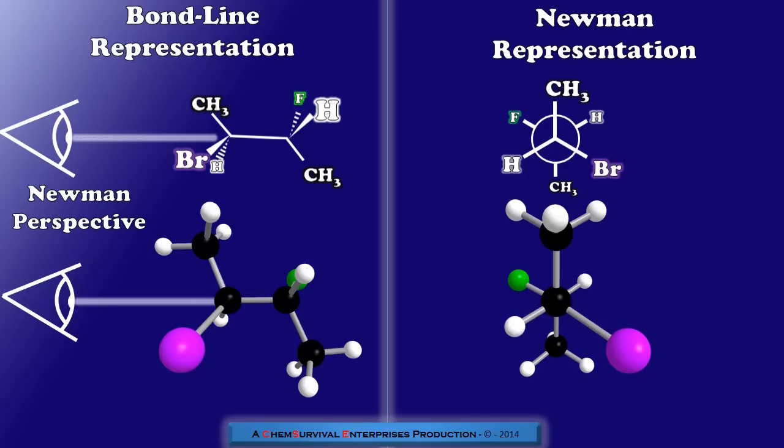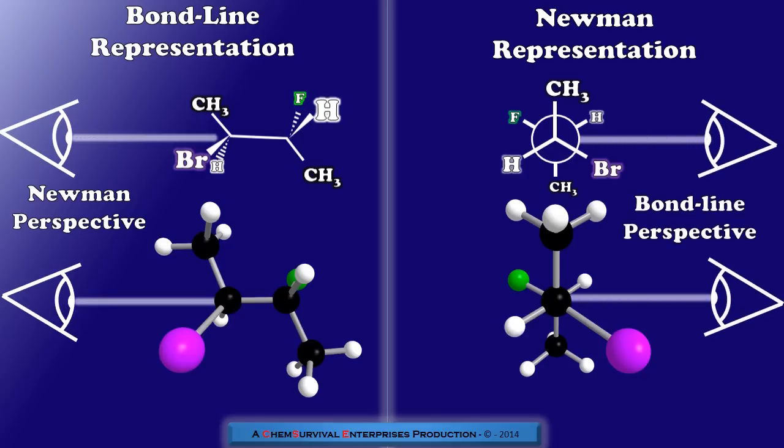And of course, to turn it back to the bond line representation, we'd simply look at it from this side. But what's key to understanding how to quickly interconvert these two representations is that there are certain patterns in where the substituents go depending on their location in the bond line representation.